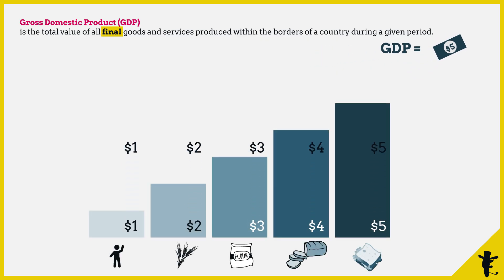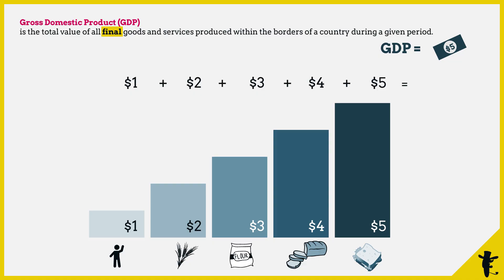If you add the value of these intermediate inputs again on top of the sandwich, it's $15 — way higher than $5 — because you have double counted, and that's wrong.